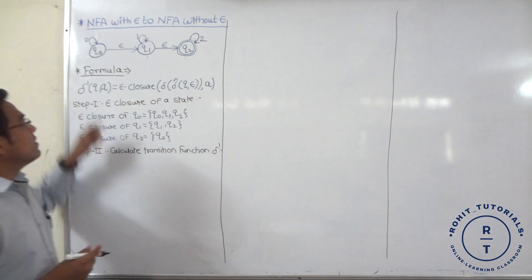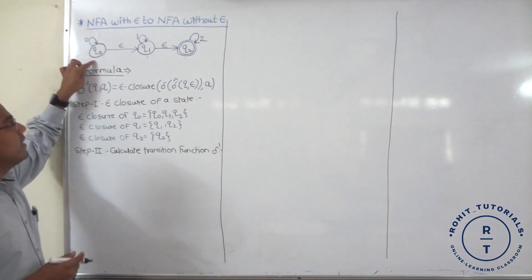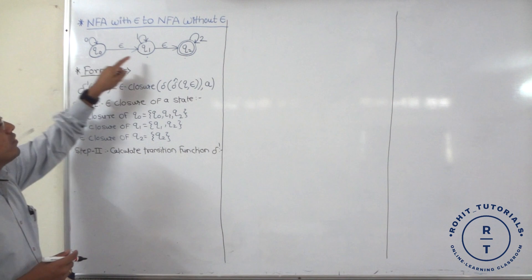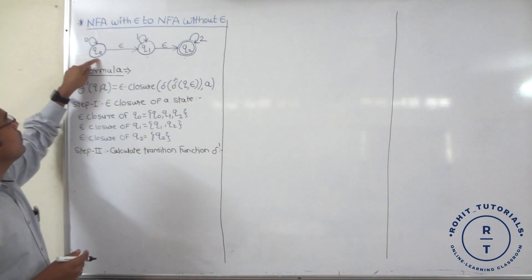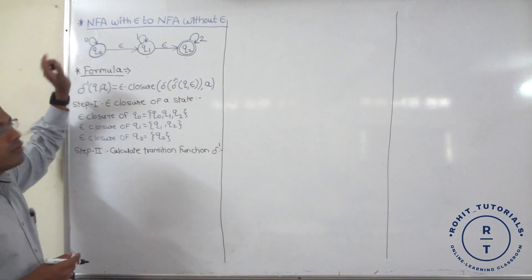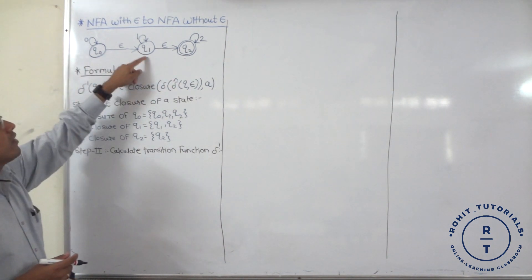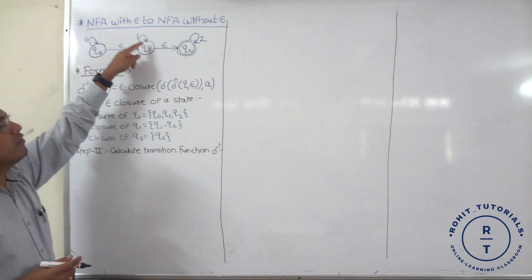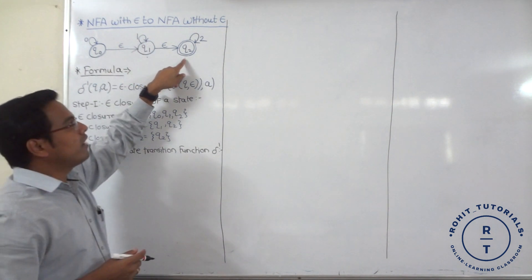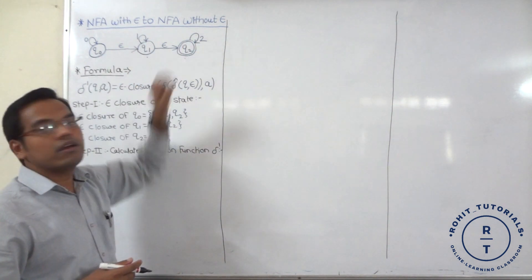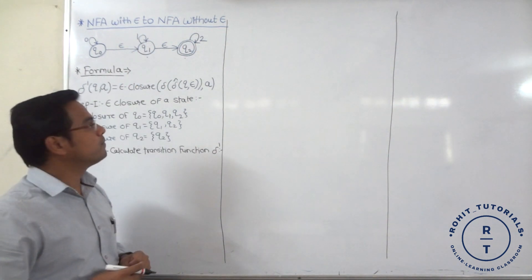Problem statement consisting of three states Q0, Q1 and Q2. Q0 having the self-loop for 0, Q1 having self-loop for 1 and Q2 having self-loop for input 2.